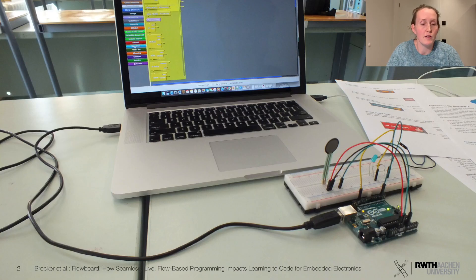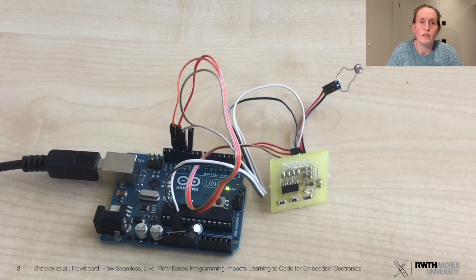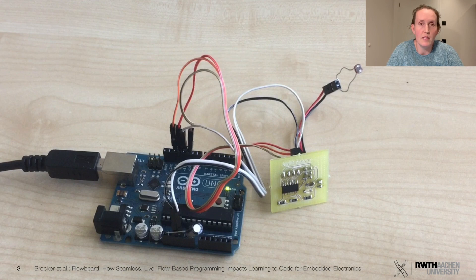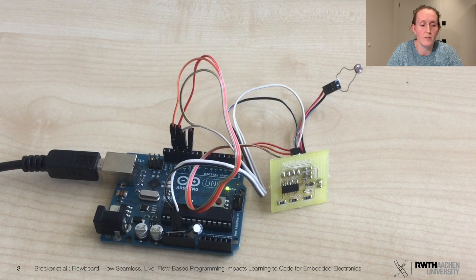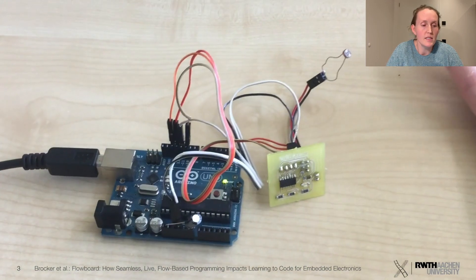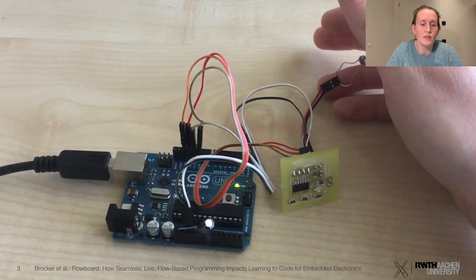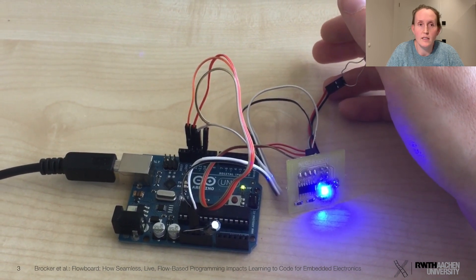Platforms like Arduino lower the threshold for makers to get in touch with embedded coding. They also support the integration into STEM education. But even with these beginner-friendly systems, learning embedded coding is still hard. You need to understand the coding, the electronics, and the relationship between code and electronics. For example, if the LED turns on as soon as the light sensor receives the signal, it is too dark.